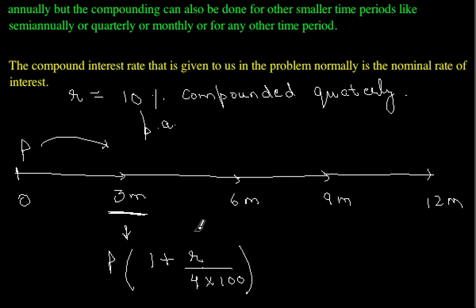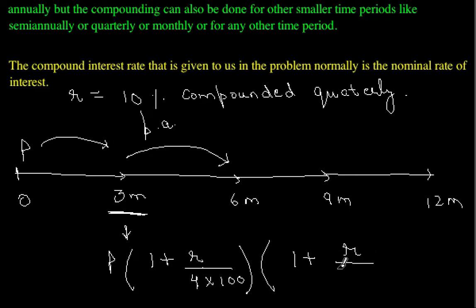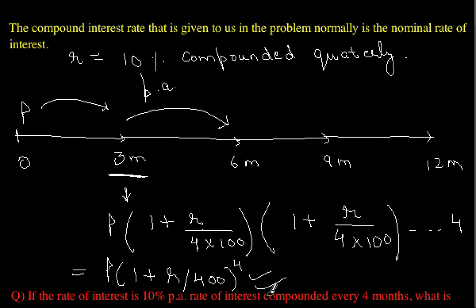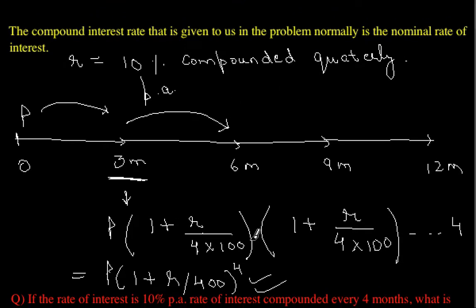This becomes the new principal at the end of 3 months. From 3 to 6 months we again pay 2.5%, but on the new principal, so we multiply again by (1 + R/400), and so on for all 4 quarters. The general formula becomes P times (1 + R/400) raised to the power 4. This is the general way to compute the amount when compounding is done for a smaller time period.